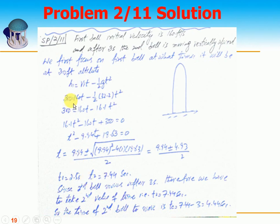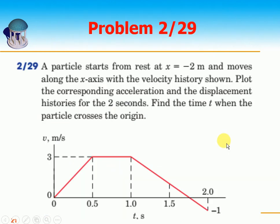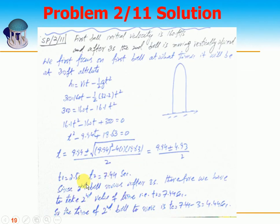We get the quadratic equation T² minus 9.94T plus 19.63. Using the quadratic formula, we obtain two values of time: 2.51 seconds and 7.44 seconds.